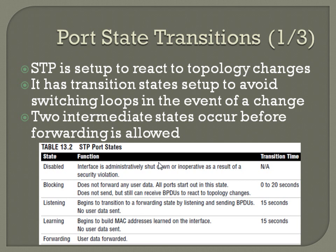If it gets through both transitions — that 30-second period — and everything looks good, at that point it's finally in a forwarding state where it can start sending data. Before that, the process exists to prevent a switching loop from potentially occurring before reaching the forwarding state.